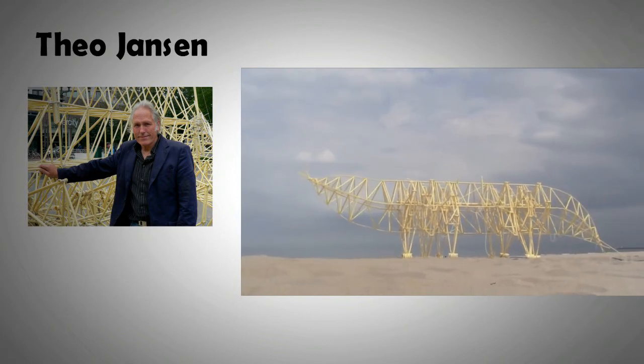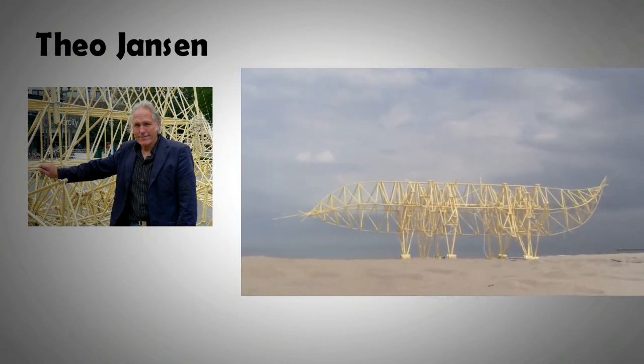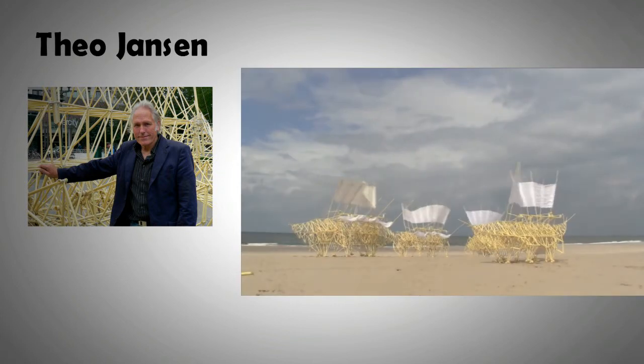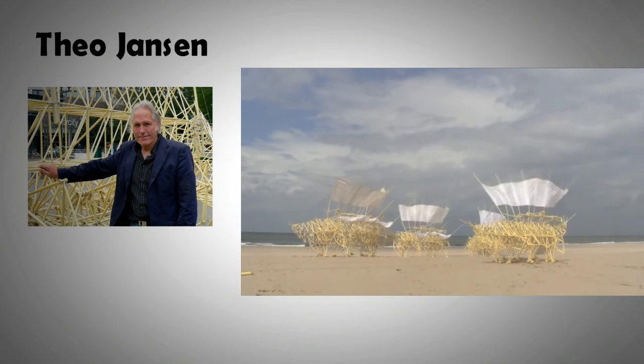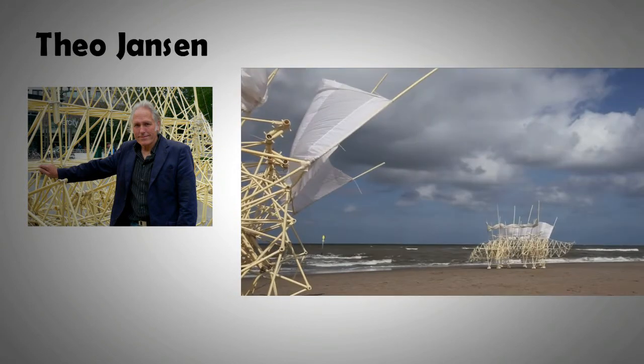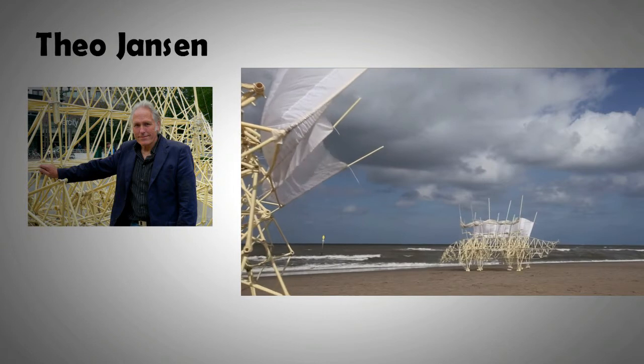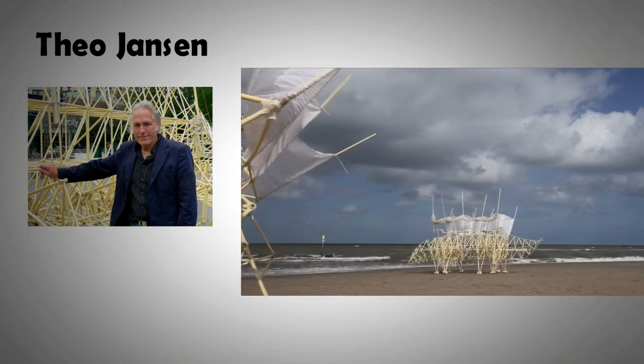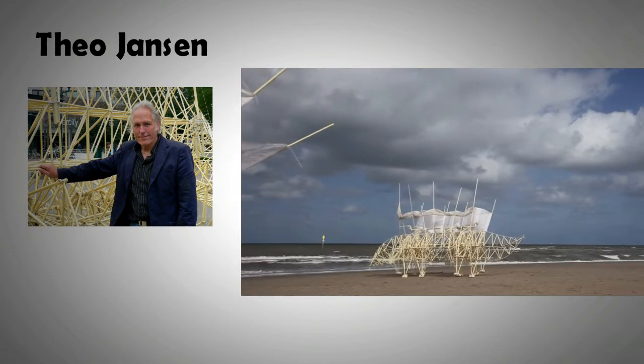Over time, the level of sophistication of his creatures has risen. In the first stage, he achieved very natural animal-like movements. This required mathematical modeling and simulation programs with several iterations. Jansen was finally able to produce a mechanism through linkages that mimicked the way a quadruped moved.